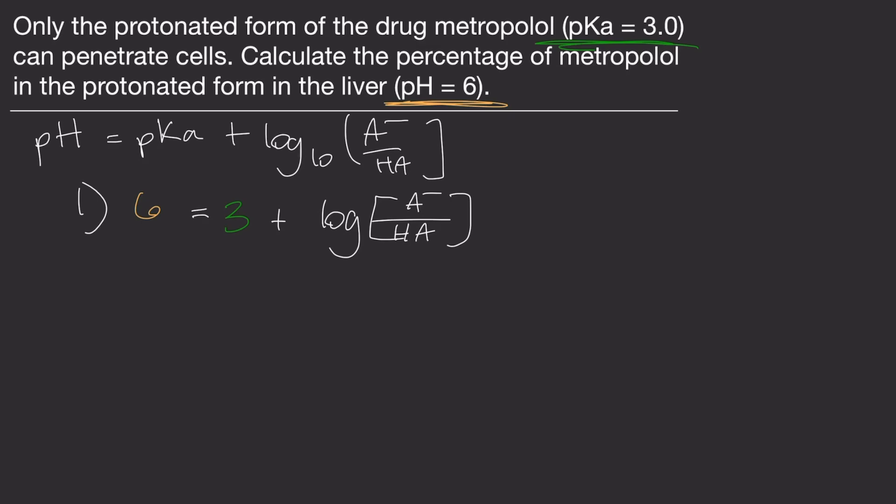Now, you're going to want to subtract 3 from the right side and left side of the equation. You should be left with 3 equals log A minus over HA. Now, we must cancel out the log. To rid the equation of logarithms, raise both sides to the same exponent as the base of the logs, which in this case is 10.